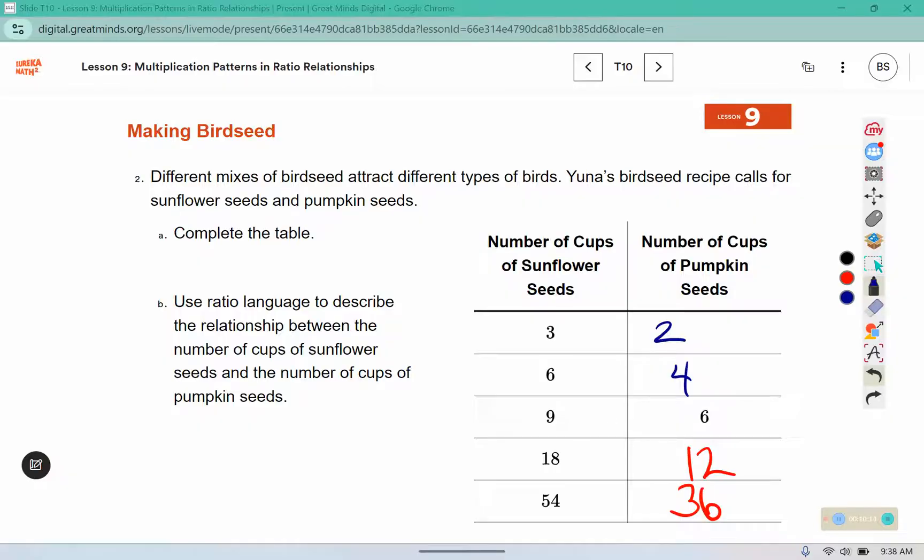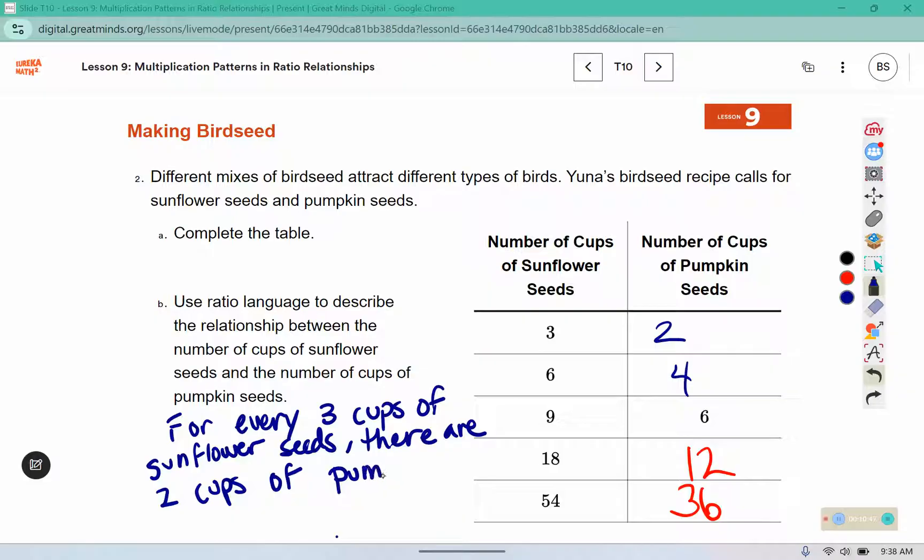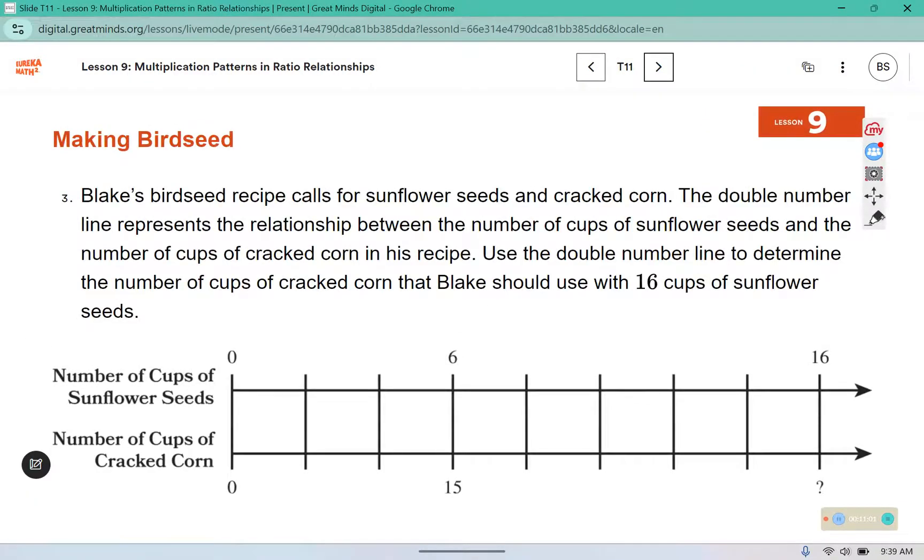Part B, use ratio language to describe the relationship between the number of cups of sunflower seeds and the number of cups of pumpkin seeds. For every 3 cups of sunflower seeds, there are 2 cups of pumpkin seeds.